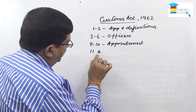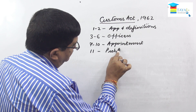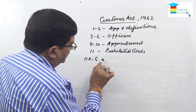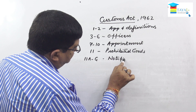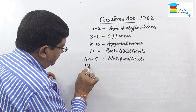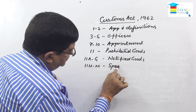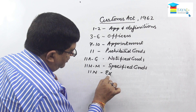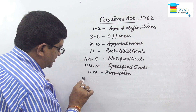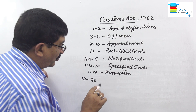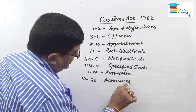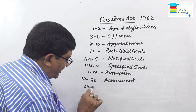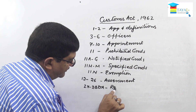Section 11 is an exhaustive, independent section covering prohibited goods. Sections 11A to 11G deal with notified goods, and sections 11H to 11M deal with specified goods. Section 11N covers exemptions. Sections 12 to 26 form the most important area, covering assessment, levy and collection, valuation, and rate of duty. Sections 27 and 28 up to 28DA are about refunds, demands, and preferential rate of duty.